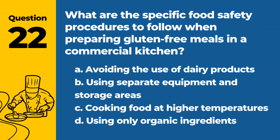Question 22. What are the specific food safety procedures to follow when preparing gluten-free meals in a commercial kitchen? A. Avoiding the use of dairy products. B. Using separate equipment and storage areas. C. Cooking food at higher temperatures. D. Using only organic ingredients. Answer: B. Using separate equipment and storage areas. To ensure food safety for gluten-free meals, it's important to use separate equipment and storage areas to prevent cross-contamination.